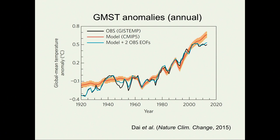We'll start with the first topic and a familiar plot. The black curve is an observational estimate of global mean surface temperature from 1920 to about now. What we see are a variety of ups and downs superimposed on a long-term warming trend. The simple question we ask is: what are the dominant spatial structures that underlie these ups and downs? And we're going to answer this using a particular approach.